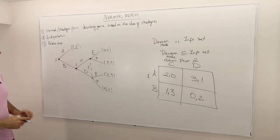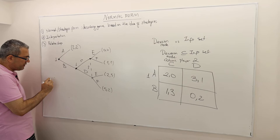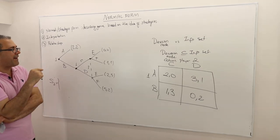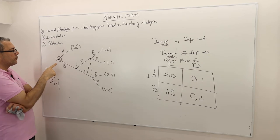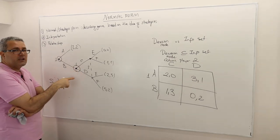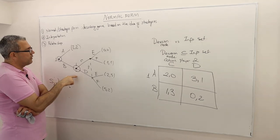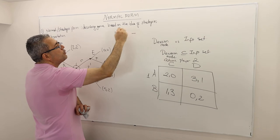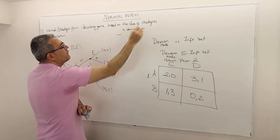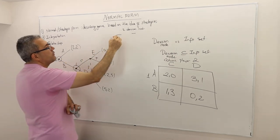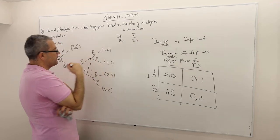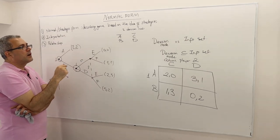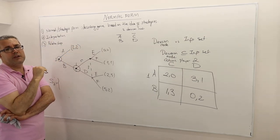So let's start with the strategy set of the first player. How many information sets does player one have? This is one decision node or info set for player one, and this is another — a singleton information set. Player one has two decision nodes, and each has two actions: A versus B in one, and C versus D in the other. So there are two-to-the-power-two, four combinations of strategies.